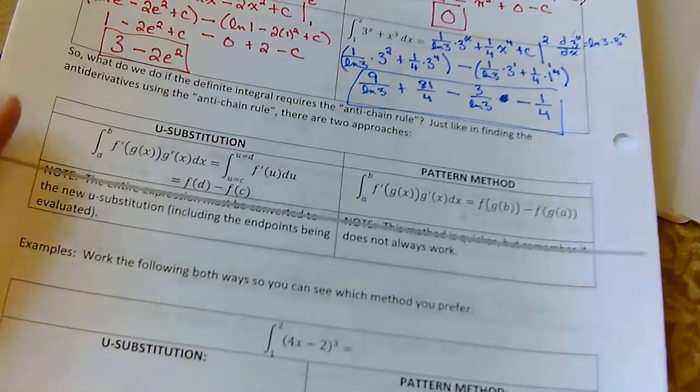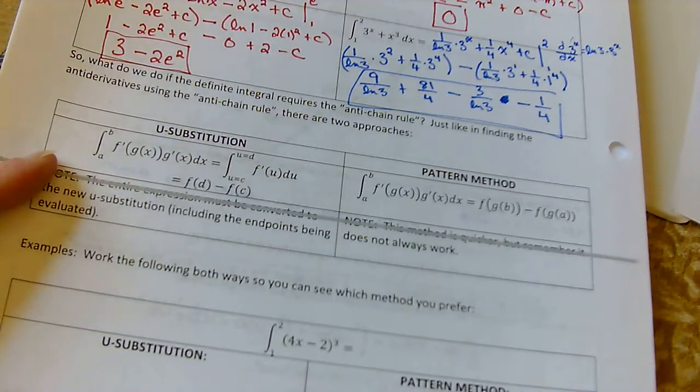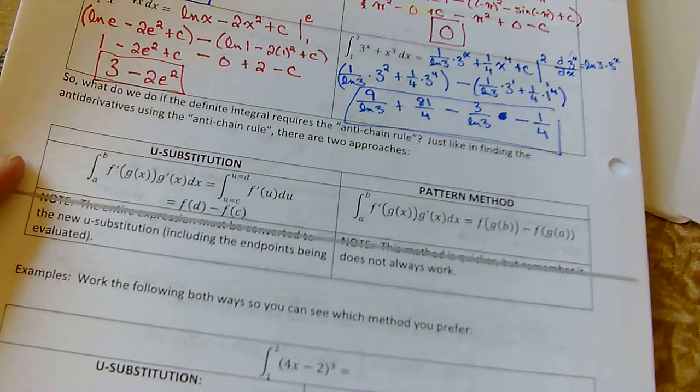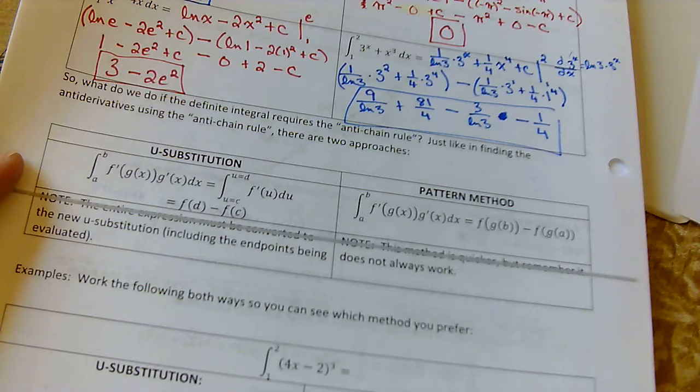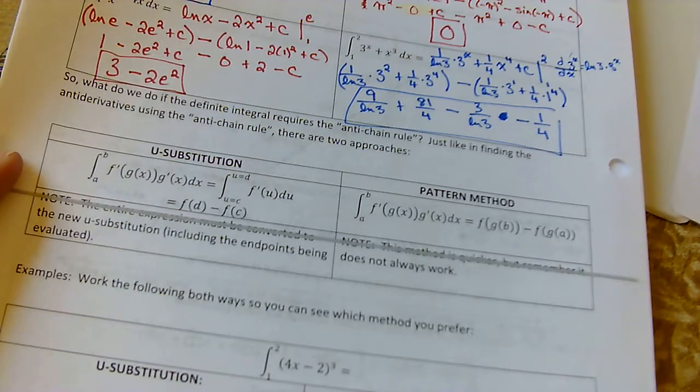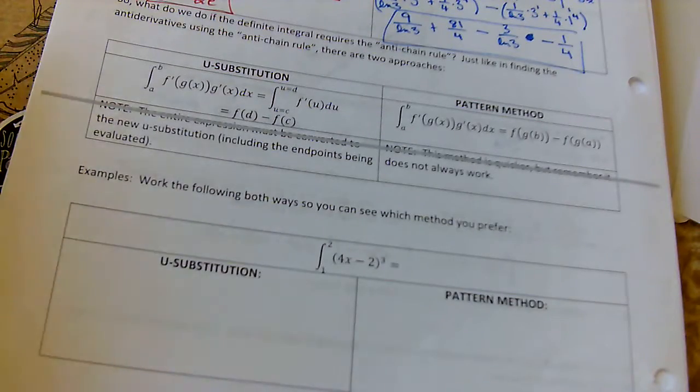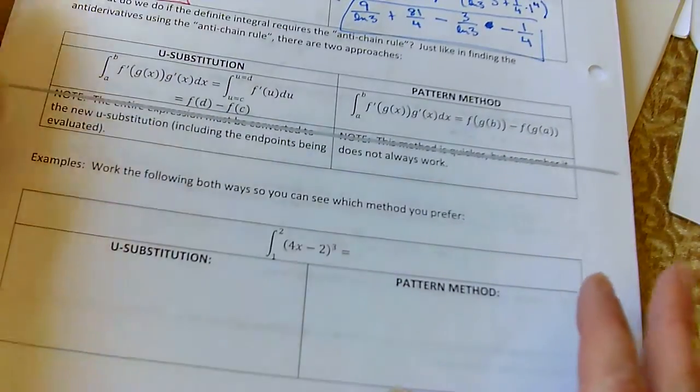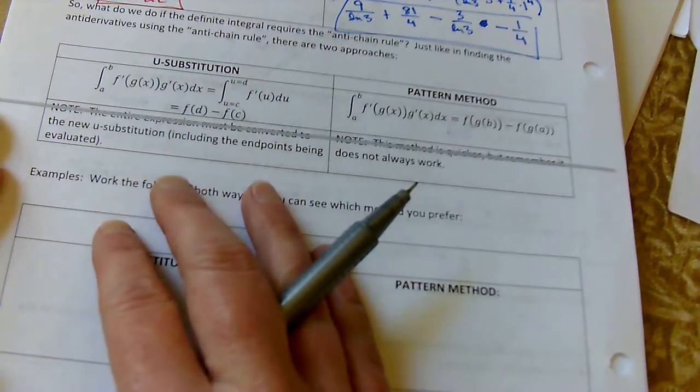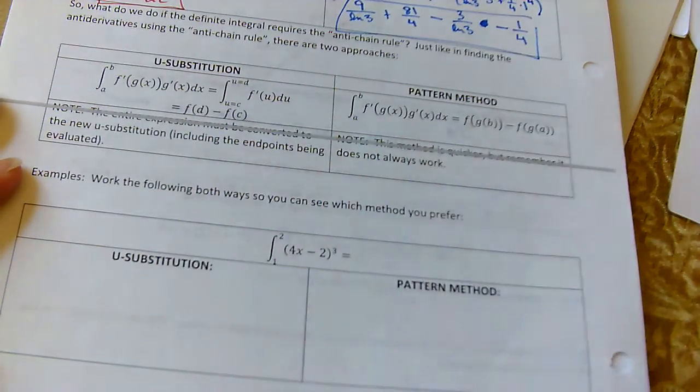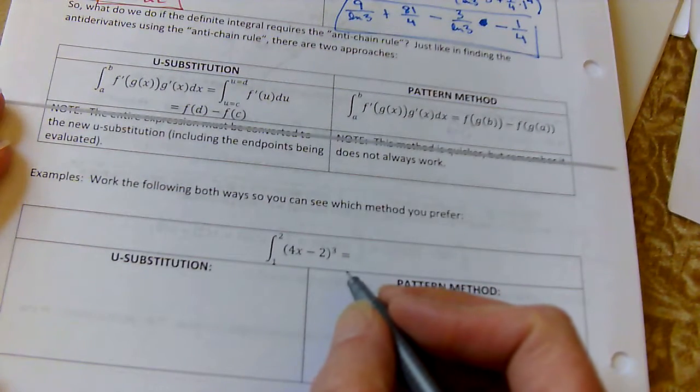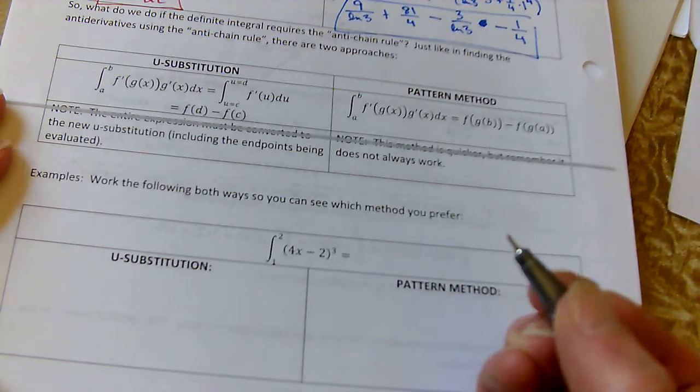So, what do we do if the definite integral requires the anti-chain rule? To be honest, I don't use the U substitution very often unless I absolutely have to. Even though it will work all the time, I find the pattern method a lot quicker and easier. So, if we use a U substitution for this one, the innermost would be U.